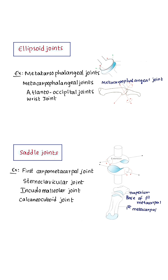Saddle joints: the articular surfaces are reciprocally saddle-shaped, that is concavo-convex. Examples include the first carpometacarpal joint, sternoclavicular joint, incudomalleolar joint, and calcaneocuboid joint.